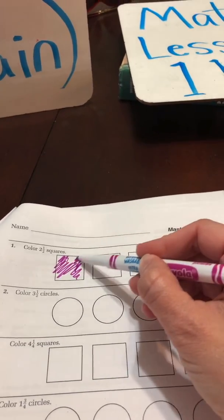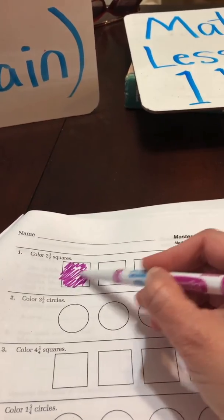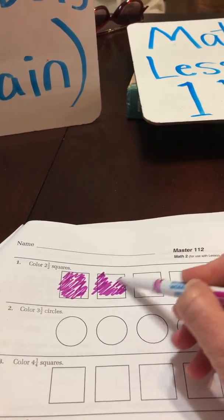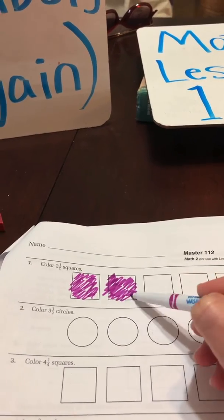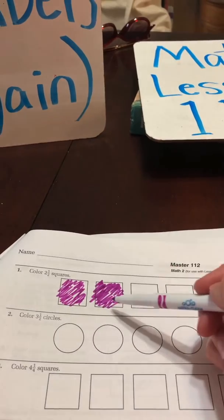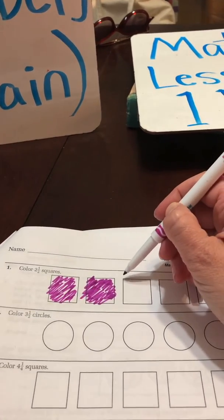One, please do a better job of coloring than Miss Tristan. Two, Miss Tristan has to hold the camera with one hand because she's not very technologically proficient. So she's just doing the best she can. One, two, and how much? A half.